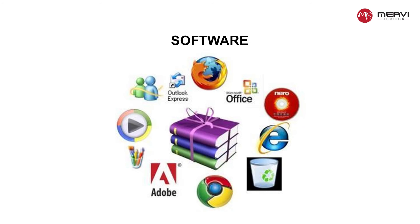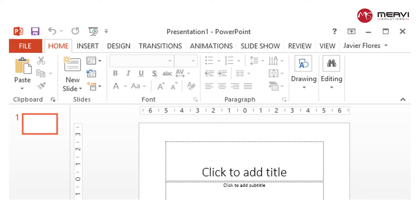Software is any set of instructions that tells the hardware what to do and how to do it. Examples of software include web browsers, games, and word processors. Below, you can see an image of Microsoft PowerPoint, which is used to create presentations.